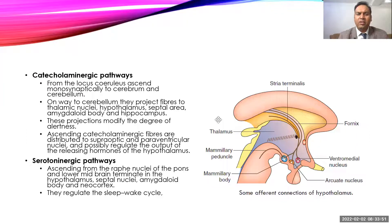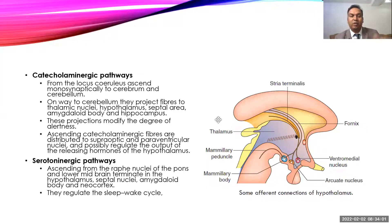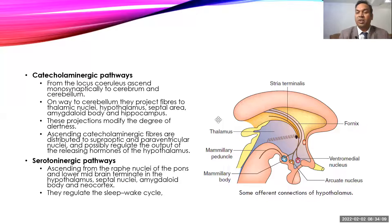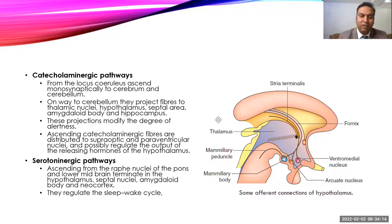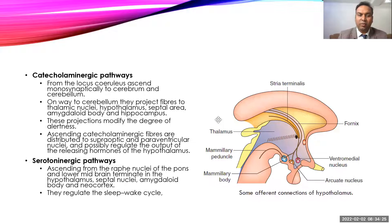These catecholaminergic fibers are more related to alertness and the sleep-wakefulness of the brain. There are also catecholaminergic fibers coming from the supraoptic and paraventricular nucleus that regulate hypothalamic hormones. The serotonergic pathway comes from the raphe nucleus of the pons, goes to the hypothalamus, septal nucleus, and amygdaloid body, and also to the neocortex — participating in the sleep-wake cycle.